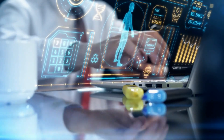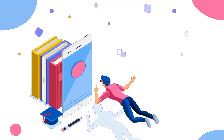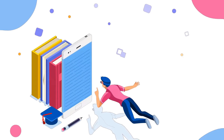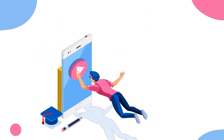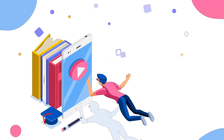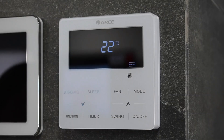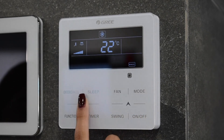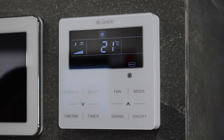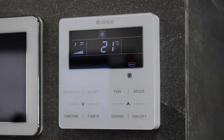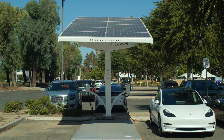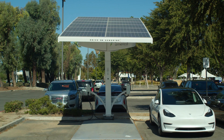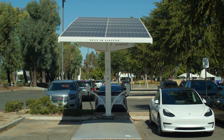IoT devices come in many forms, including smartphones, smart home appliances such as thermostats, lights and security cameras, wearables like fitness trackers and smartwatches, connected cars, and industrial machinery and equipment.